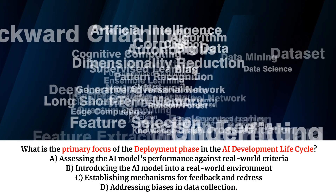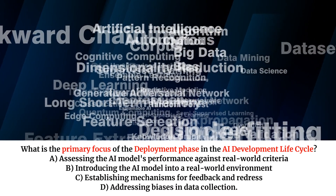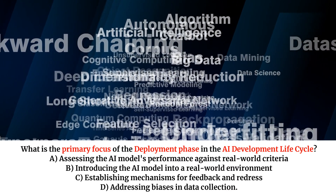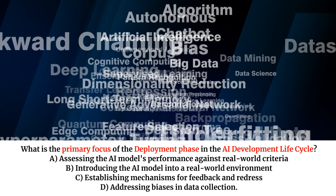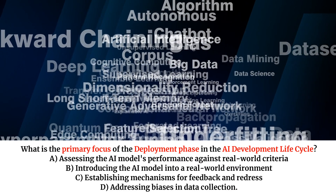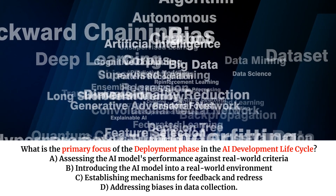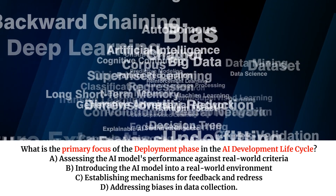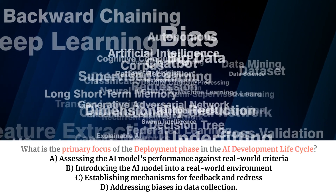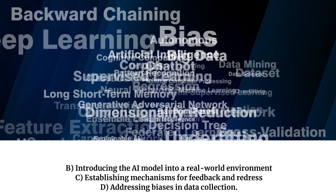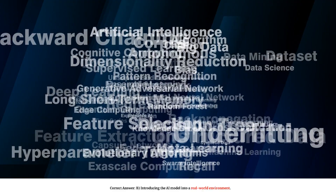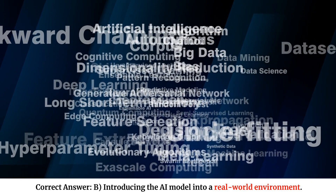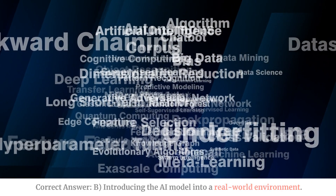What is the primary focus of the deployment phase in the AI development lifecycle? A. Assessing the AI model's performance against real-world criteria. B. Introducing the AI model into a real-world environment. C. Establishing mechanisms for feedback and redress. D. Addressing biases in data collection. Correct answer: B. Introducing the AI model into a real-world environment.